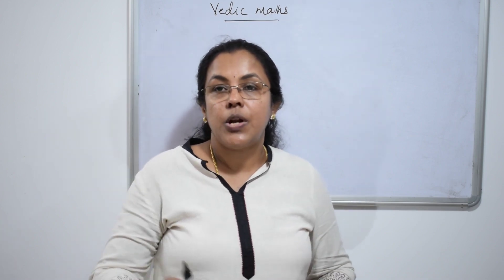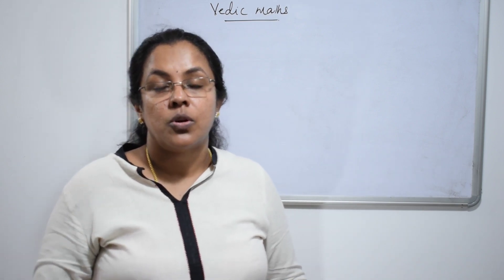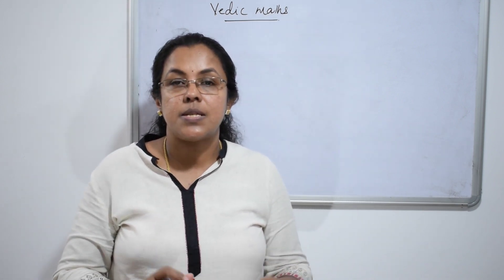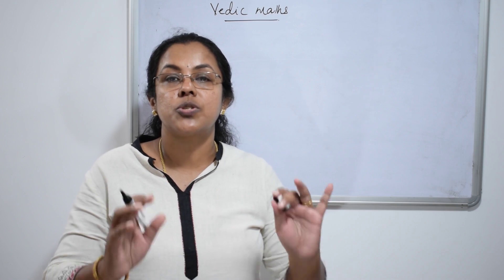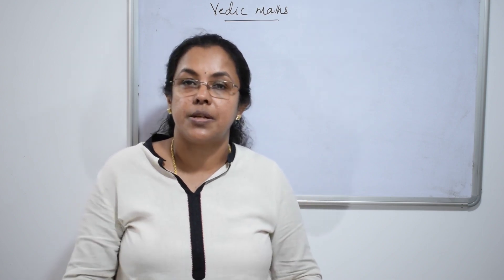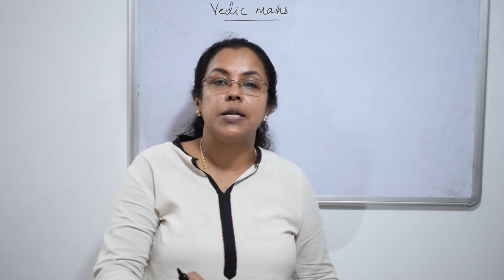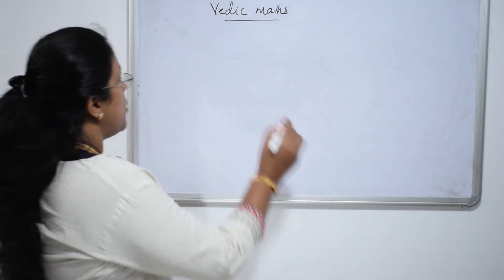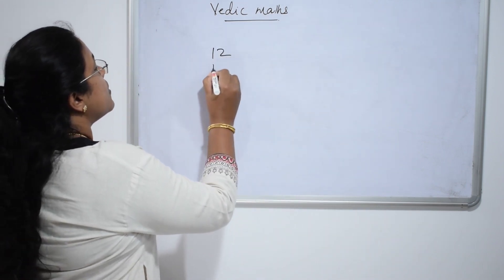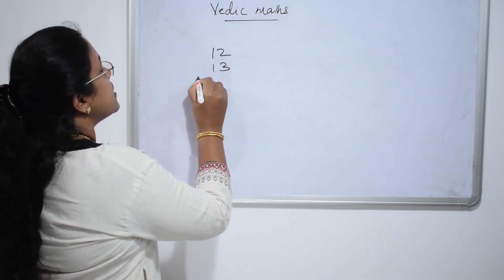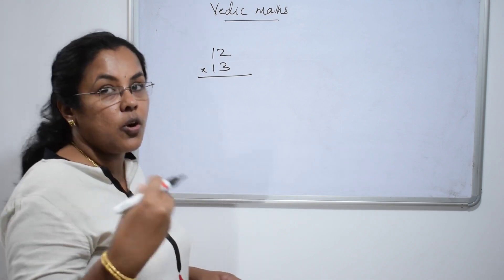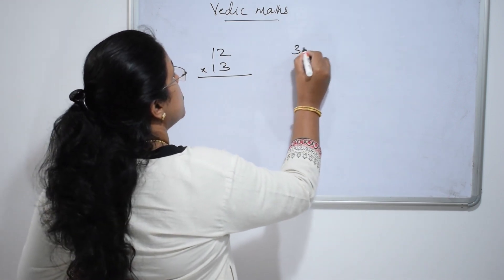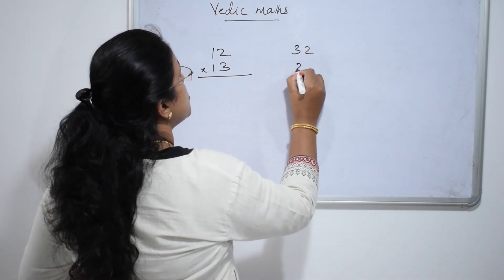In this video I will show how to multiply two two-digit numbers. This is the most general method. For example, 12 and 13. This method is applicable for any two-digit numbers, such as 32 and 22.